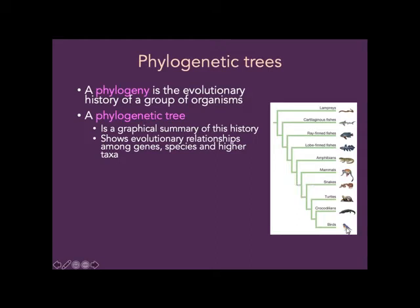A phylogenetic tree shows evolutionary relationships amongst genes, species, or higher taxa. This tree is showing the relationship between major groups of animals like birds, crocodilians, and turtles. You can see smaller trees that show just populations within a species, or the evolutionary trees around right now for COVID-19 — those are RNA-based trees that show nucleotide differences between strains.